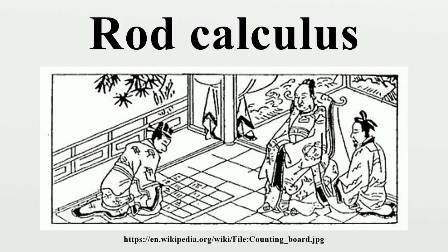The counting rods are usually made of bamboo sticks, about 12 cm to 15 cm in length and 2 mm to 4 mm in diameter, sometimes from animal bones, ivory, or jade. A counting board could be a tabletop, a wooden board with or without grid, on the floor, or on sand.